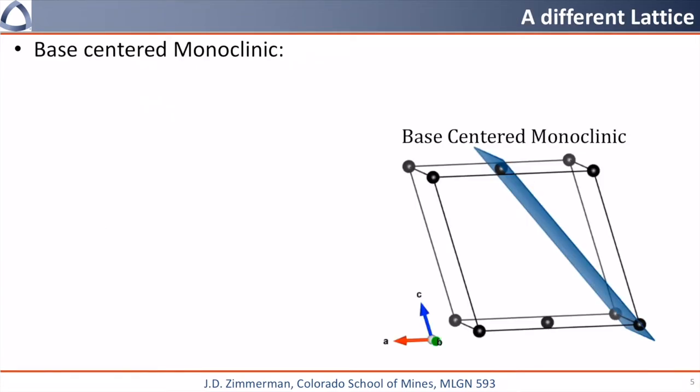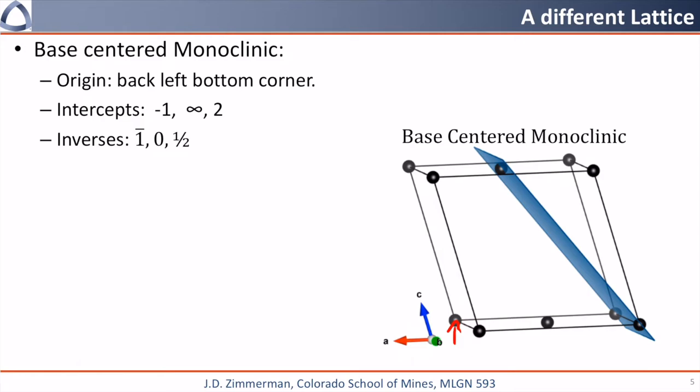Now let's try it for a base centered monoclinic lattice. The origin is going to be the back left bottom corner, so we're going to go with this atom right here. The intercepts will be negative 1 in the a direction. It's parallel to the b, so that will give you infinity, and then we're going to have to project up and see that this would cross the c axis at 2. So we'll take the inverse of all of these, and you'll get negative 1, 0, 1 half. Find the lowest common integer multiples, and we'll get a (2 bar, 0, 1).